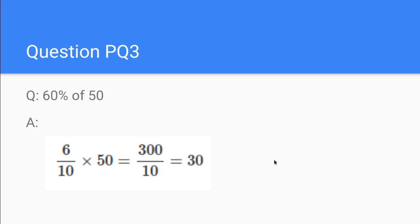On to question 3. 60% of 50. 6 divided by 10 is 60%. If you get 60% in the test out of 10, you mean you get 6 out of 10. So we write this as 6 divided by 10, and then we're multiplying this by 50. Of is basically just times. So we're doing 6 times 50, which is 300, and we've got this divided by 10. So now we've got 300 divided by 10, which is 30.